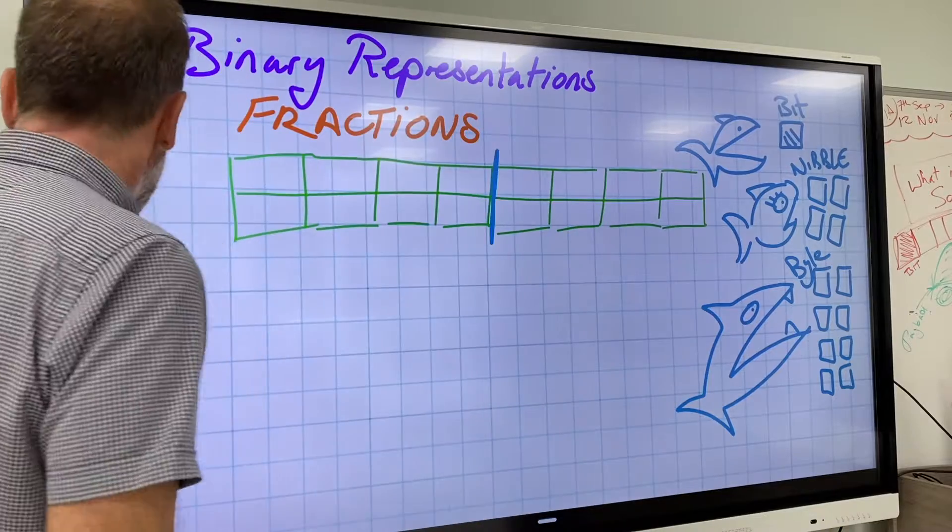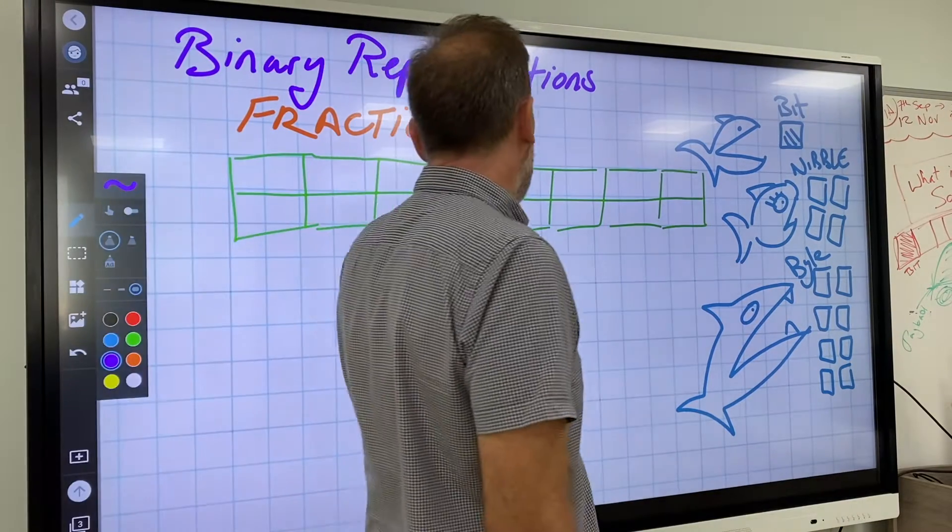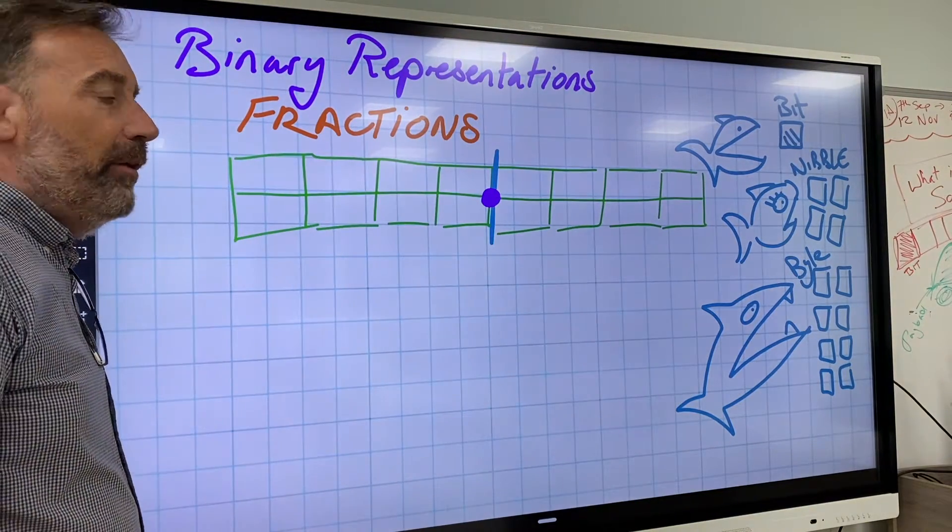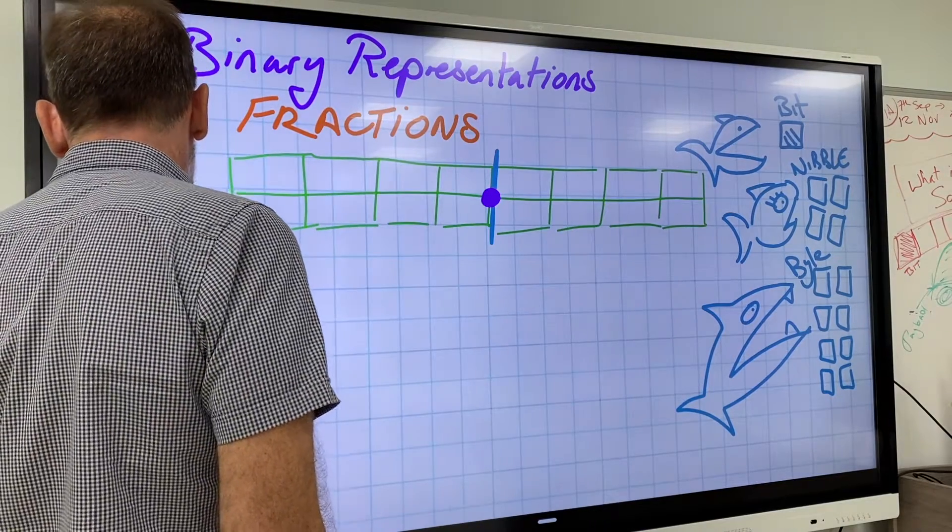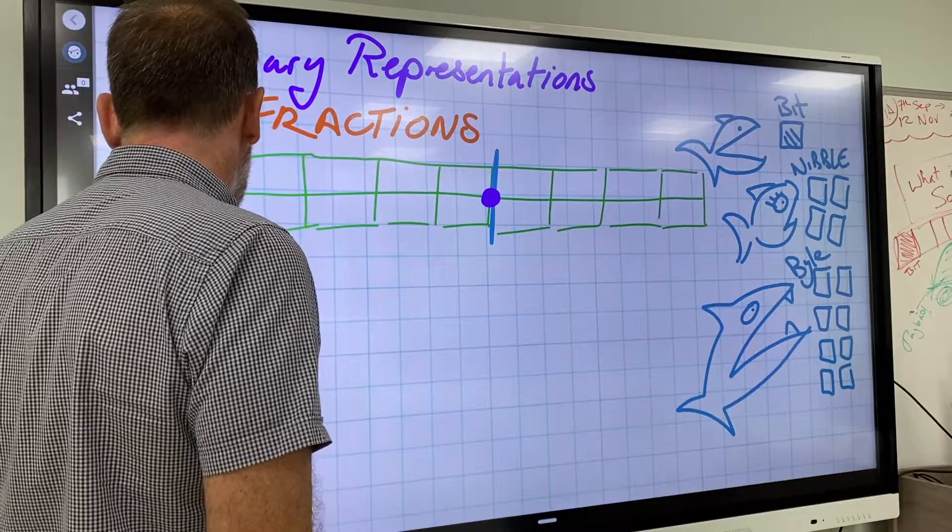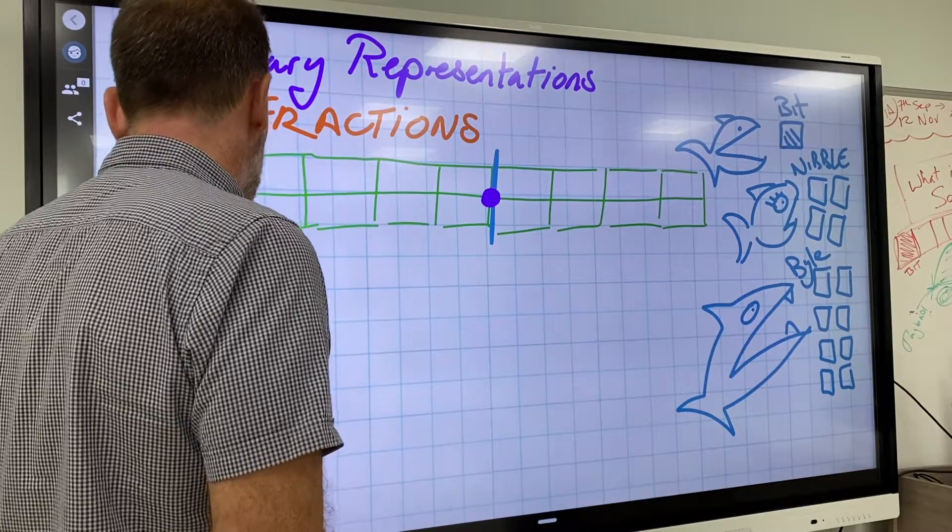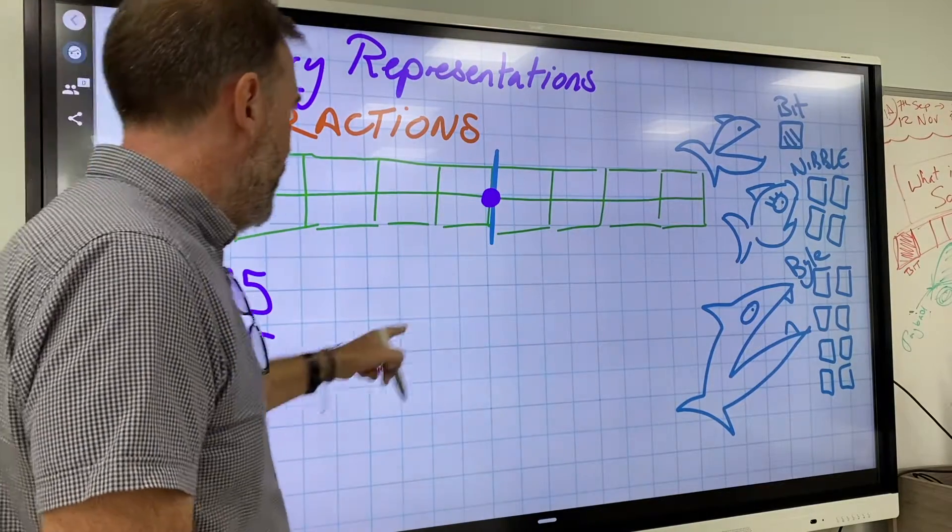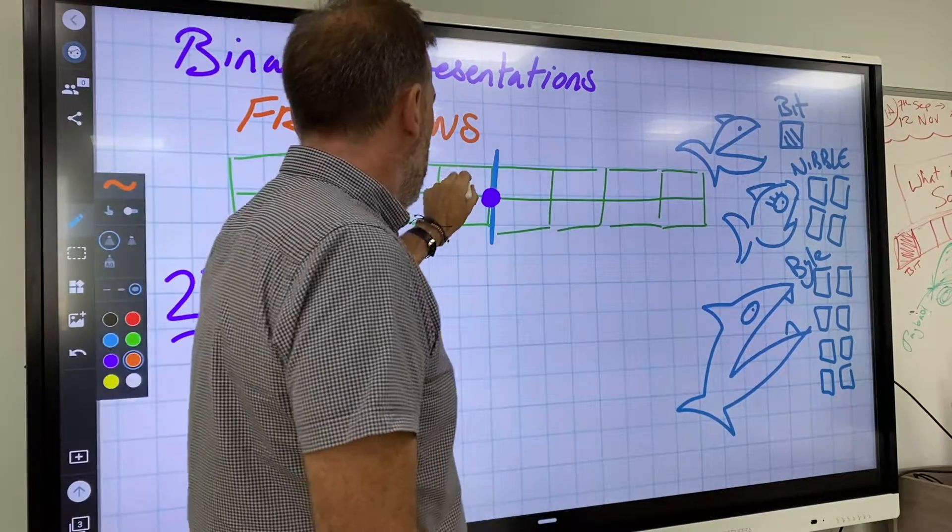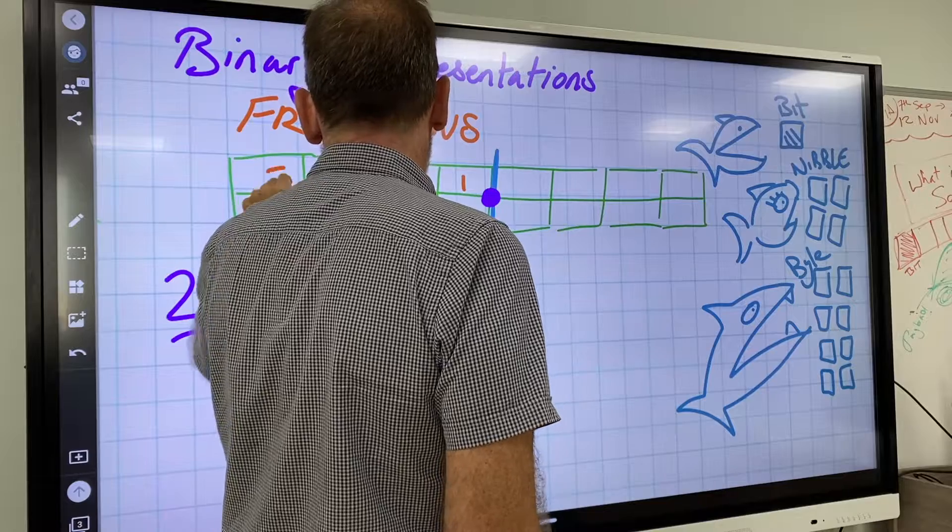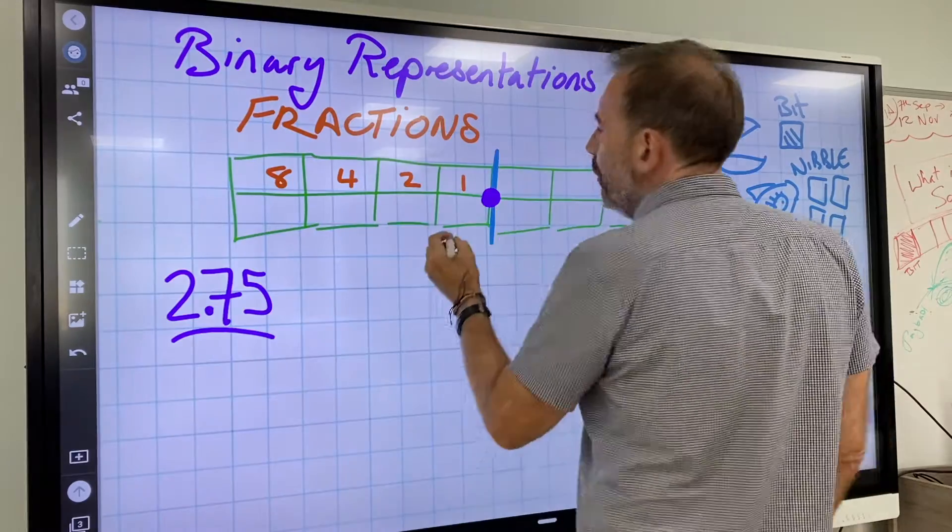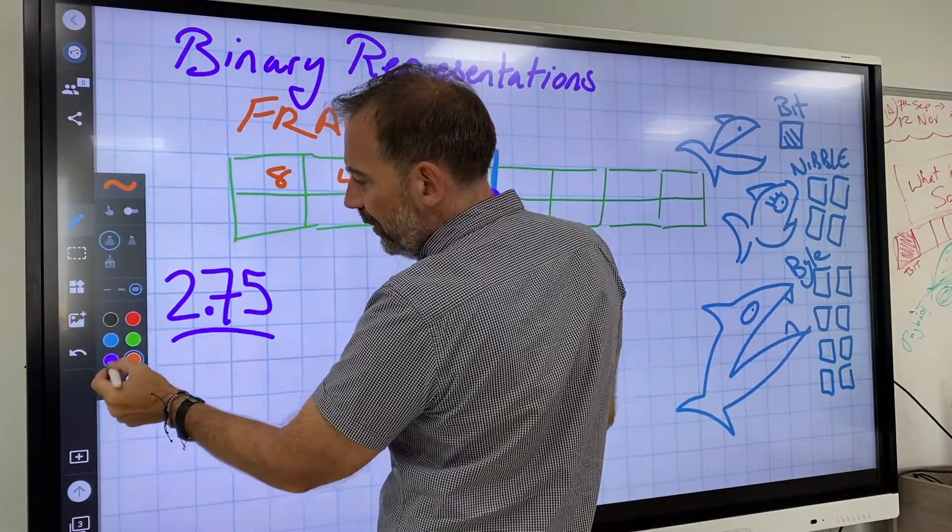Okay, so bit, nibble, bite. We are going to be doing this and splitting this down the middle into two nibbles because we're creating fractions. This is the punto, the decimal point. Now if I've got a number, I'm going to put a number in here: 2.75.